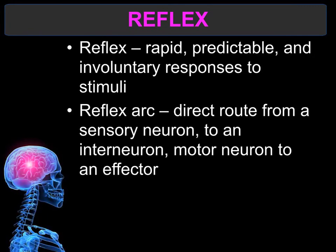A reflex is an automatic, rapid movement that does not require thinking. A reflex arc is made up of a sensory neuron that detects incoming information, which travels to the spinal cord and synapses through an interneuron, then connects to a motor neuron. The motor neuron carries out the action through the effector. Reflexes are much faster than normal responses because they completely bypass the brain — the spinal cord already knows what signal to send out automatically.